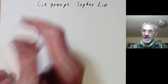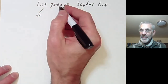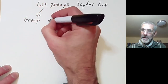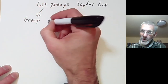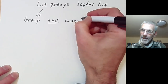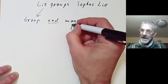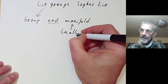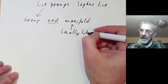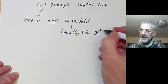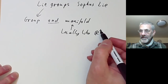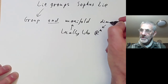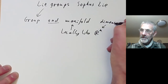So what is a Lie Group? Well, a Lie Group, as the name suggests, is a group and it's also a manifold. Saying it's a manifold means it looks locally like n-dimensional space over the reals for some integer n, where this number n is called the dimension of the Lie Group.